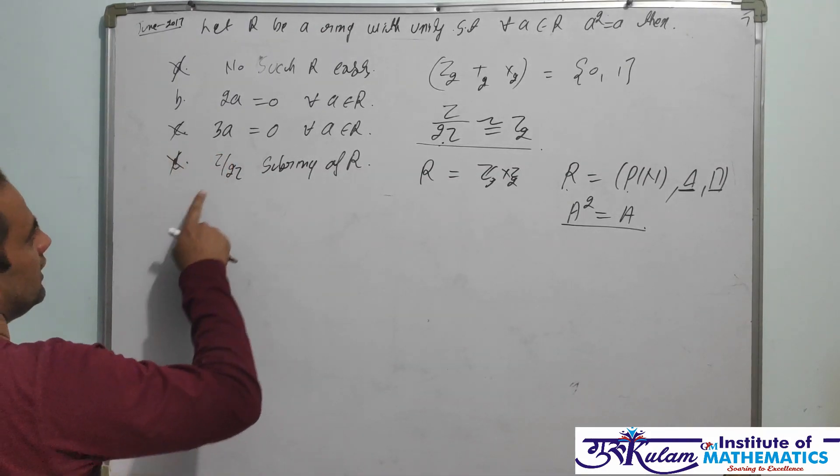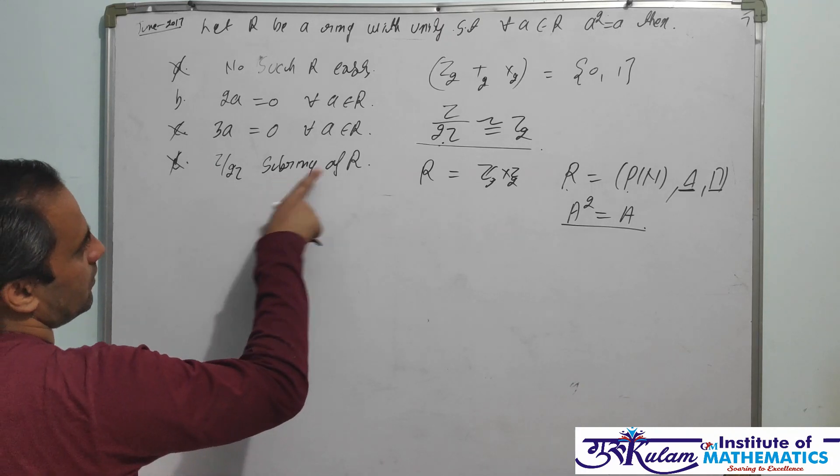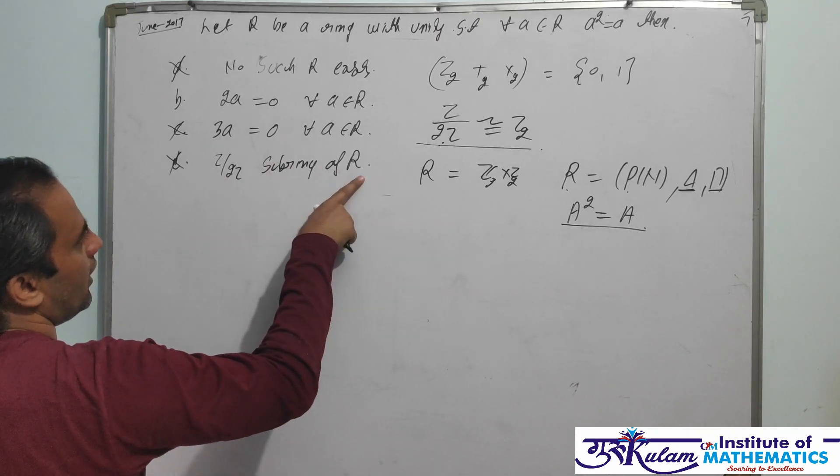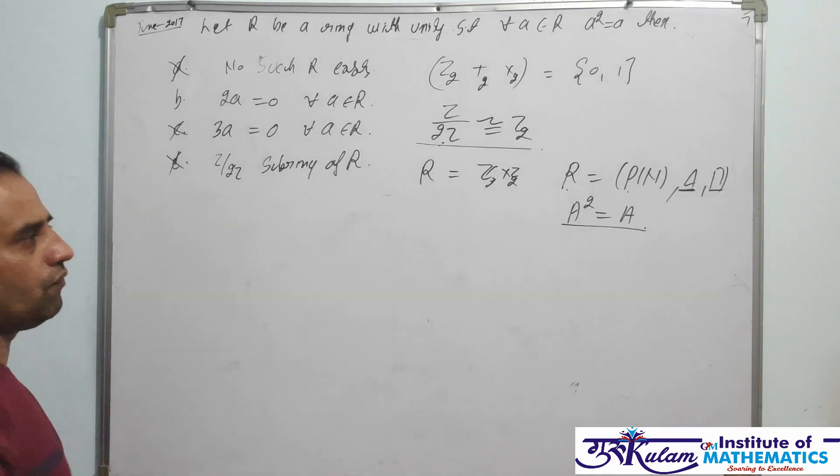Z by 2Z is not exactly a subring of R but it is isomorphic to some subring of R. Your D option is false since Z by 2Z is a subring of R. This is not a subring of R. This is isomorphic to some subring of R.